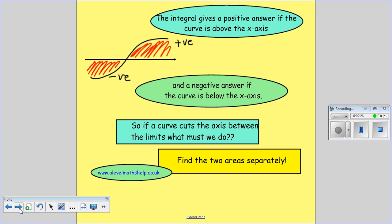Now we can get a curve which crosses the x-axis like this one. So part of it's above and part of it's below. And when we're above the x-axis, when we work out our integral, we get a positive result. And when we're below, we get a negative result.